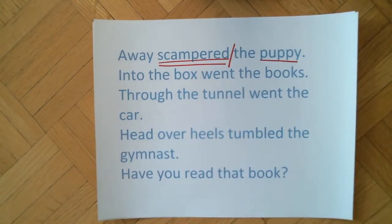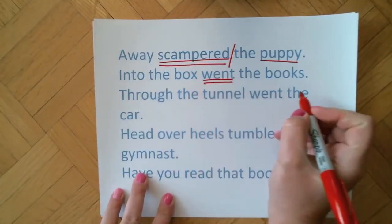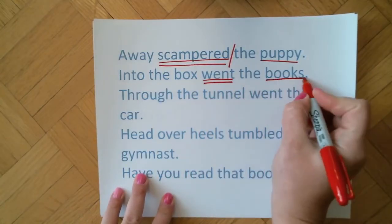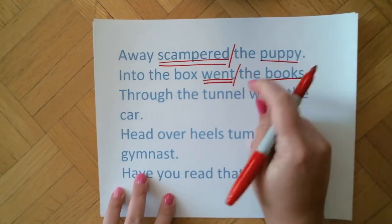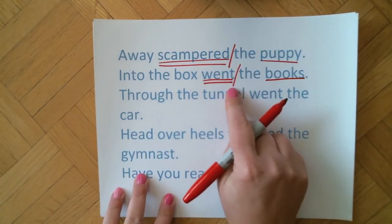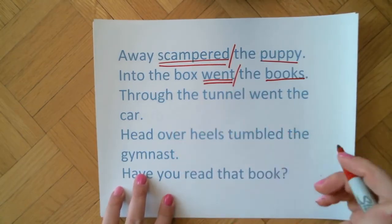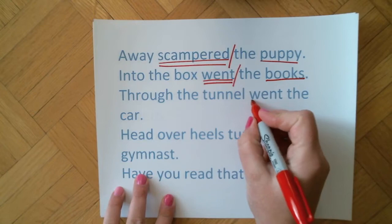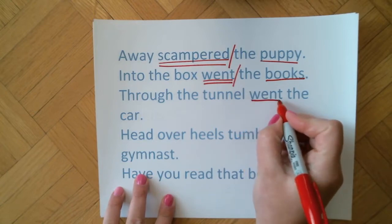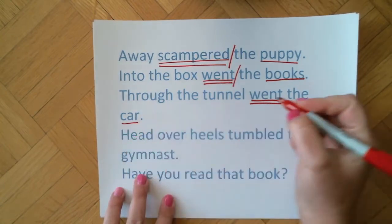So the dividing line goes behind the verb instead of in front of it. 'Into the box went the books.' What's the verb? Went. What went? The books went into the box. Again, the line goes right behind the verb. 'Through the tunnel went the car.' What's the verb? Went. And what went? The car went.